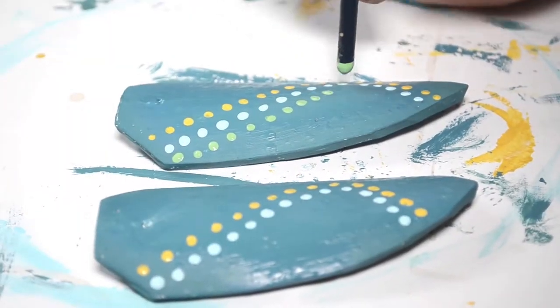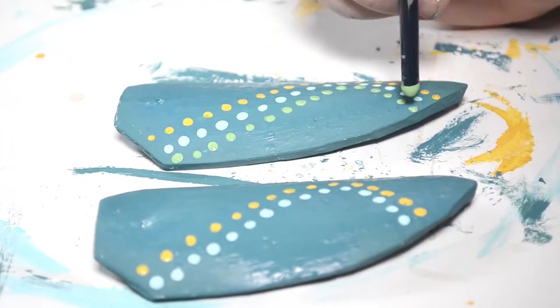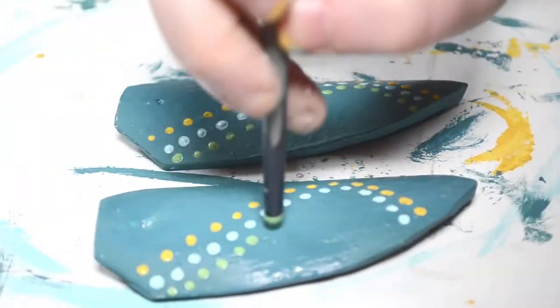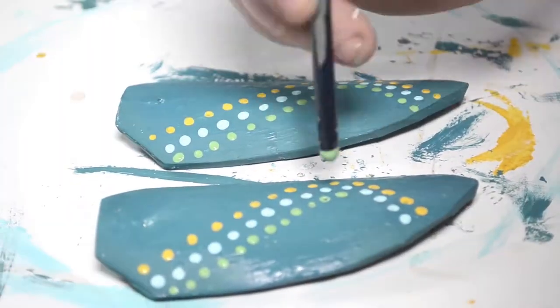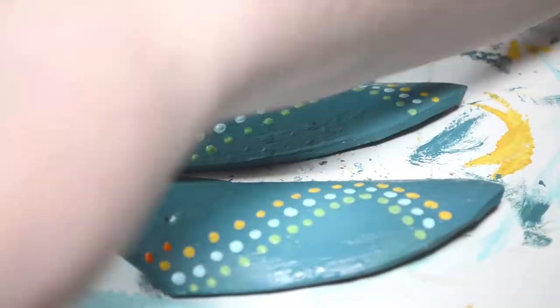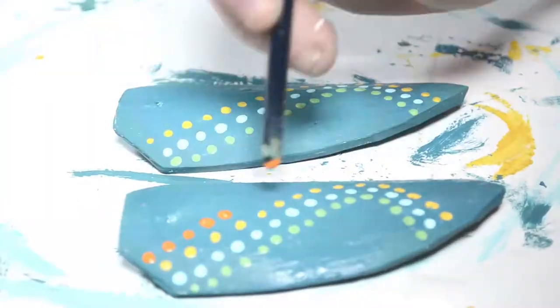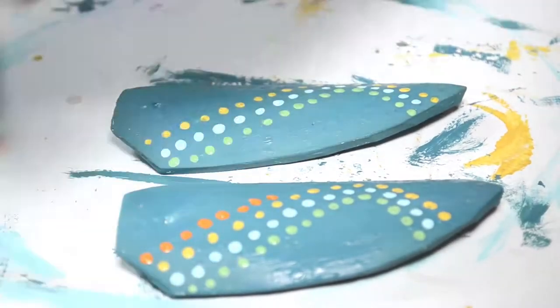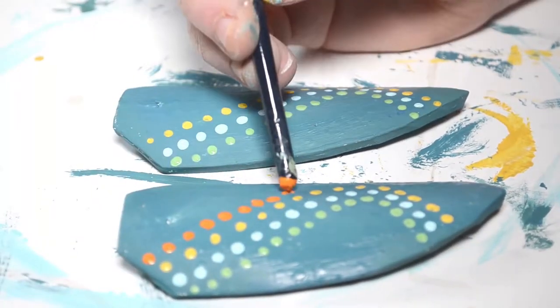How I do dot work is I use the end of my brush, not the brush part, the other side. If you dip this in paint it usually makes like a perfect circle because the end of brushes are already rounded, so there's a little hack for you guys.